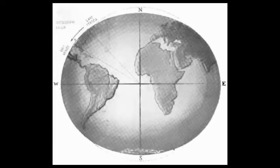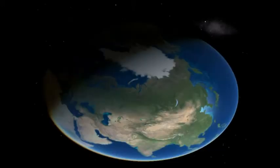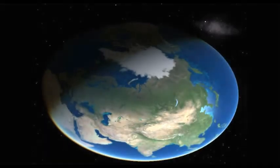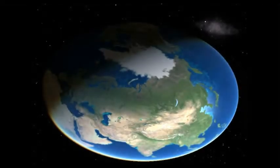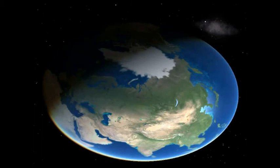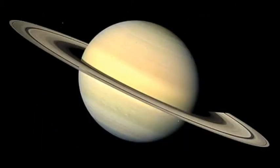Earth's equator is more than a dozen miles farther from the planet's center than are the north and south poles. The technical term for Earth's shape is oblate spheroid. Most planets are oblate spheroids. Saturn is the most noticeably wonky.